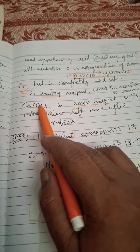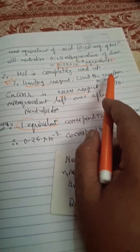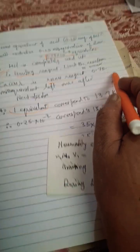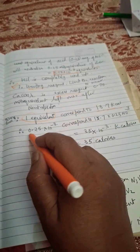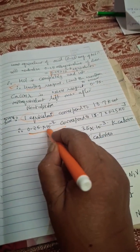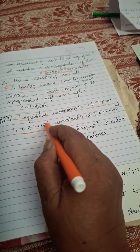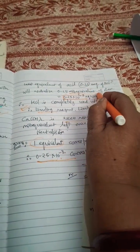Calcium hydroxide is excess reagent. How much? 0.75 milliequivalents excess. Now, 1 equivalent corresponds to 13.7 kilocalories, so 0.25 × 10^-3 equivalents. Here it is equivalence, here it is milliequivalents.